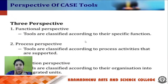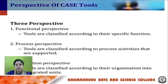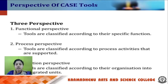Moving on to perspective of CASE tool. The perspective of CASE tool is divided into three types: functional perspective, process perspective, and integration perspective. Functional perspective classifies tools according to their specific function. Process perspective classifies tools according to the process activity they support. Integration perspective classifies tools according to their organization into integrated units.